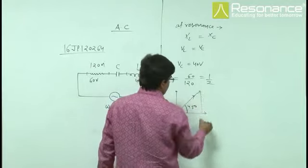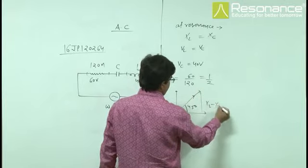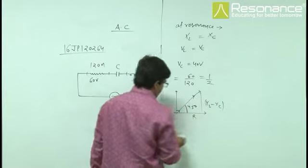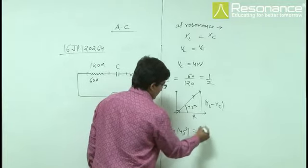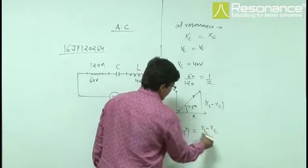this is XL minus XC, this is R. So, tan 45 degrees equals XL minus XC by R.